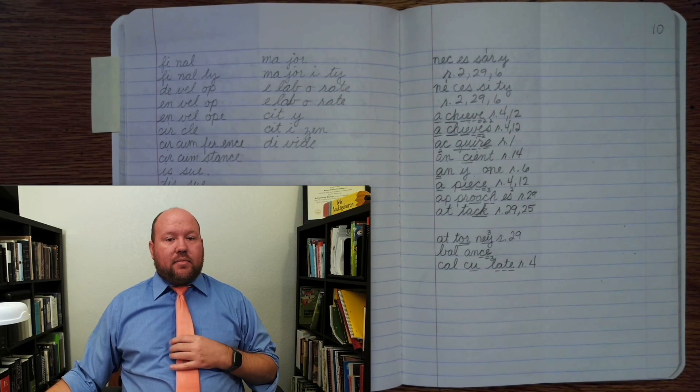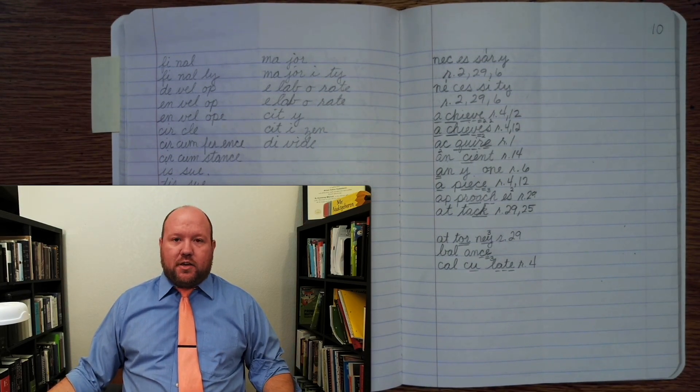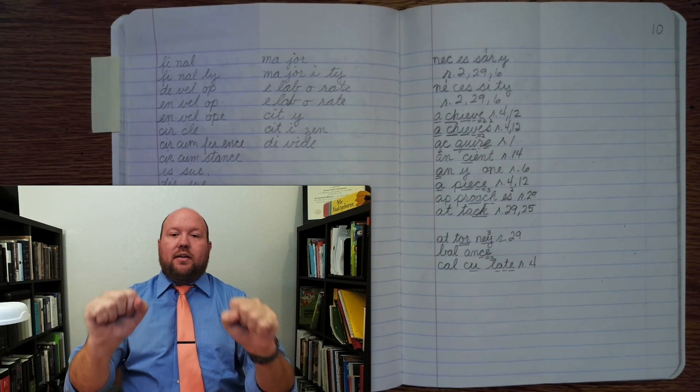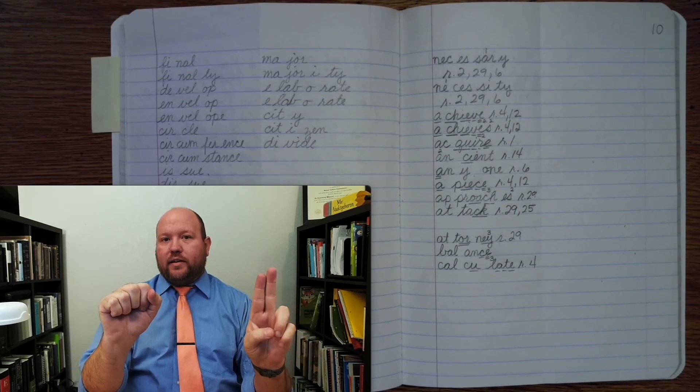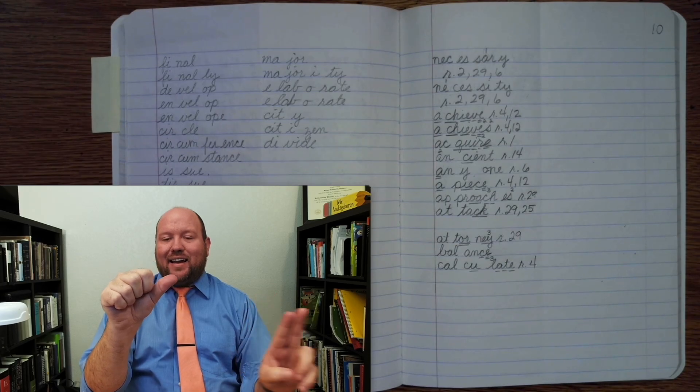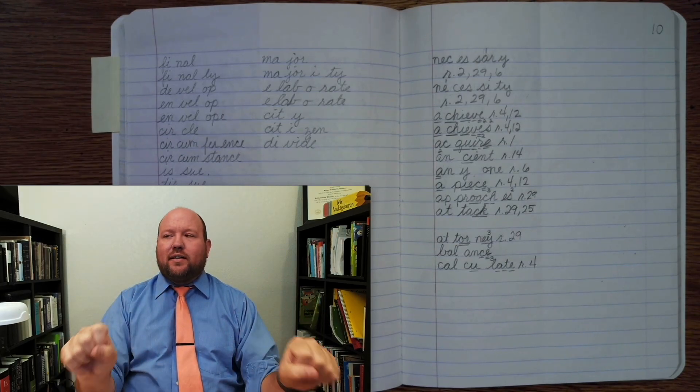Now, if you calculate something, you have made a calculation. Calculate. Base word. Calculation. Calculation. Base word calculate ending on. I write calculate, change the T to a T-I, and add on to make the word calculation.